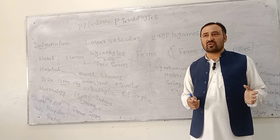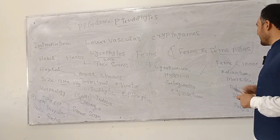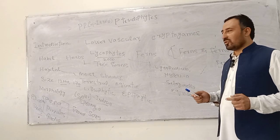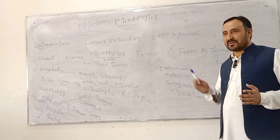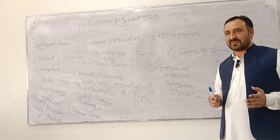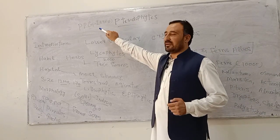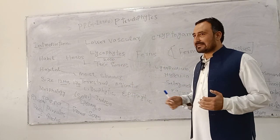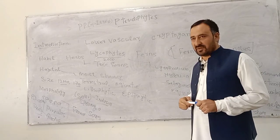The two main groups are: one is known as lycophytes and another one is known as ferns. Previously they were known as ferns and fern allies. The lycophytes were previously known as fern allies. But according to the modern classification, according to the PPG1 — Pteridophyte Phylogeny Group — the name fern allies has been replaced by lycophytes.